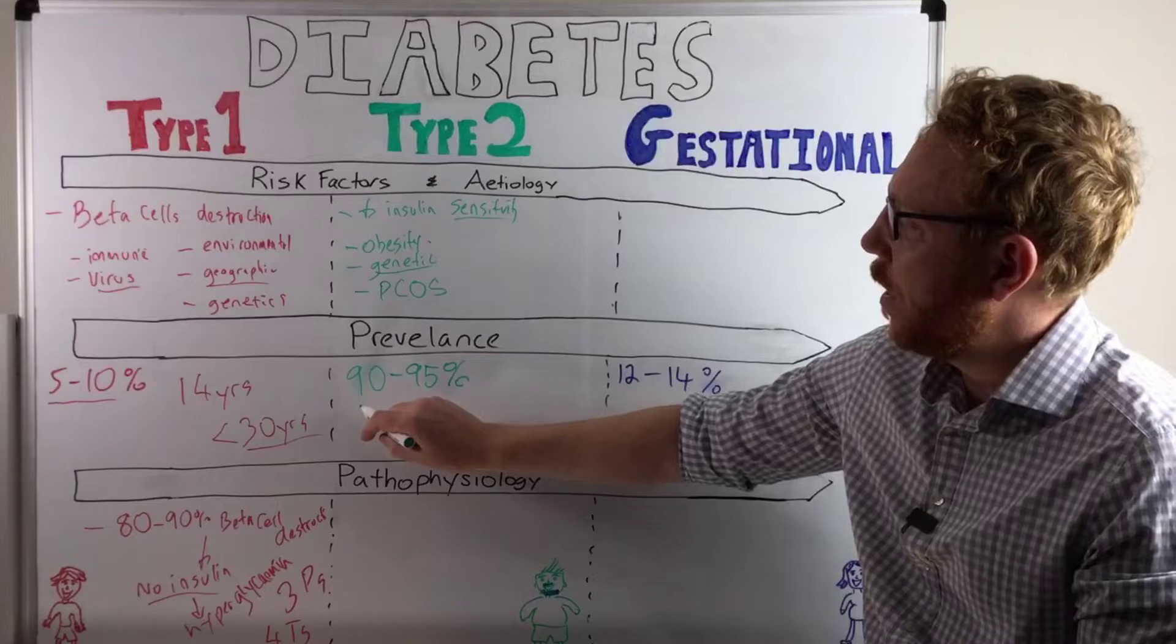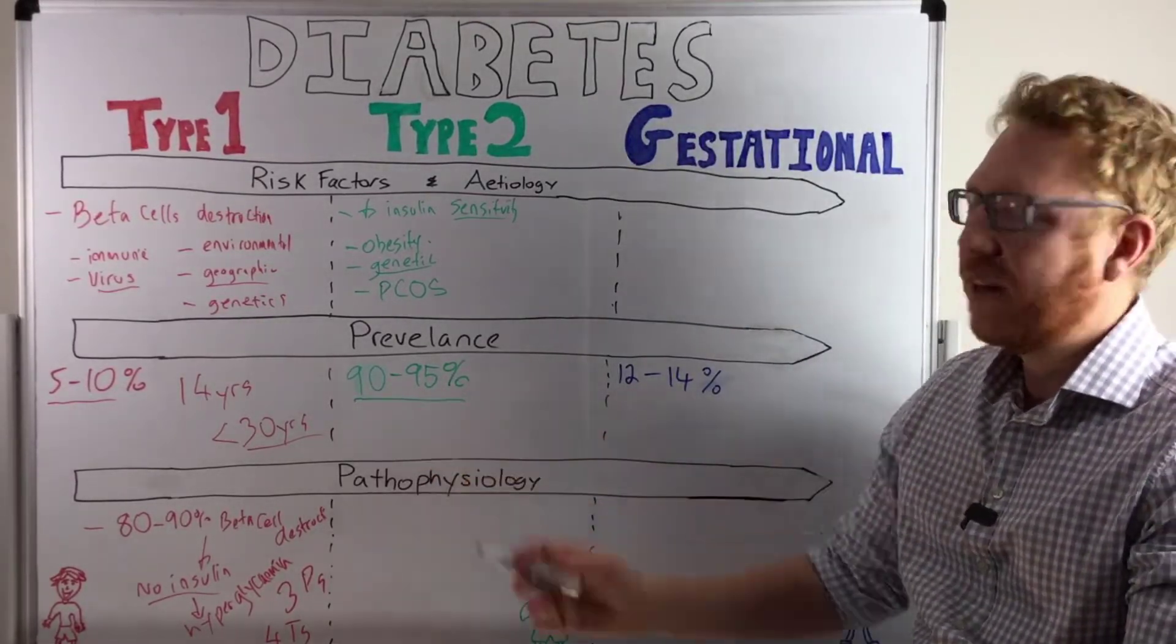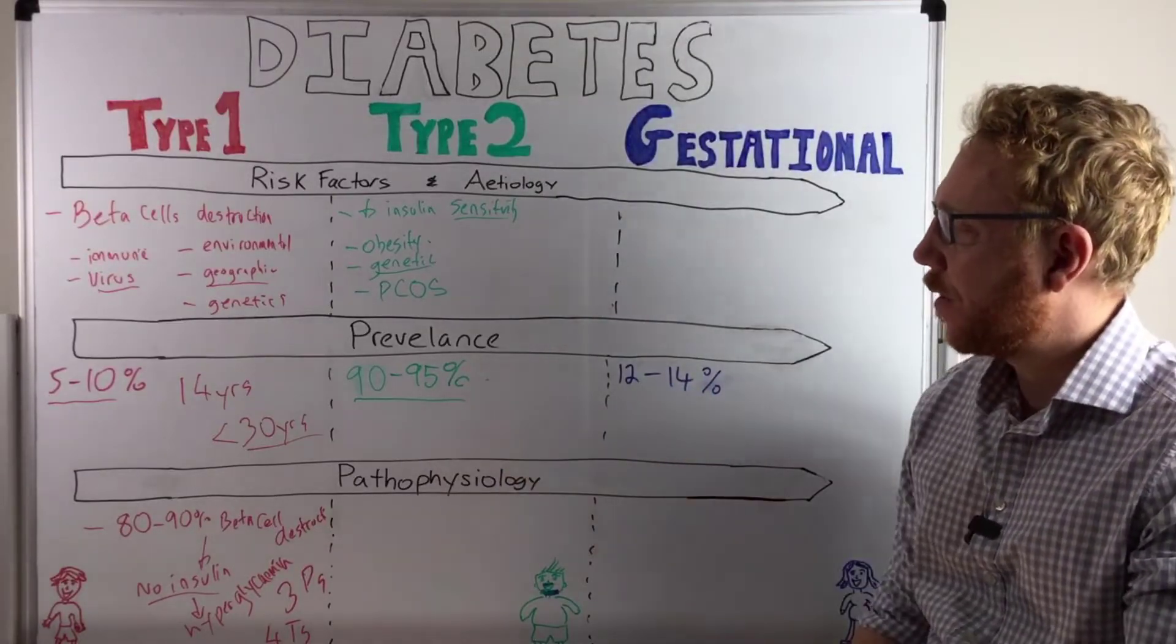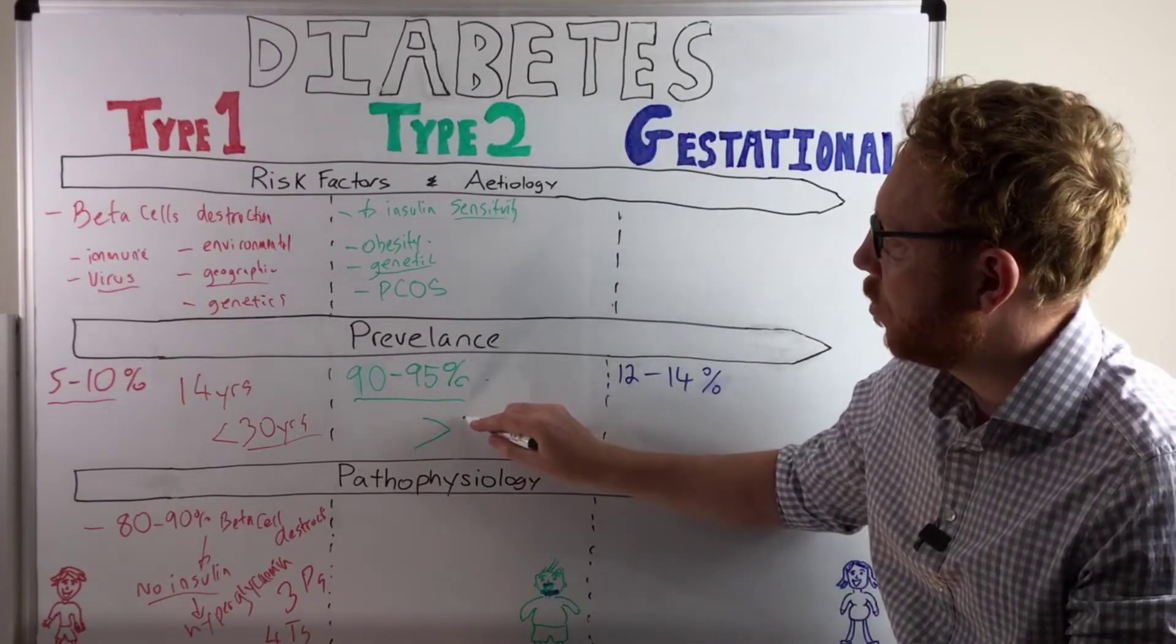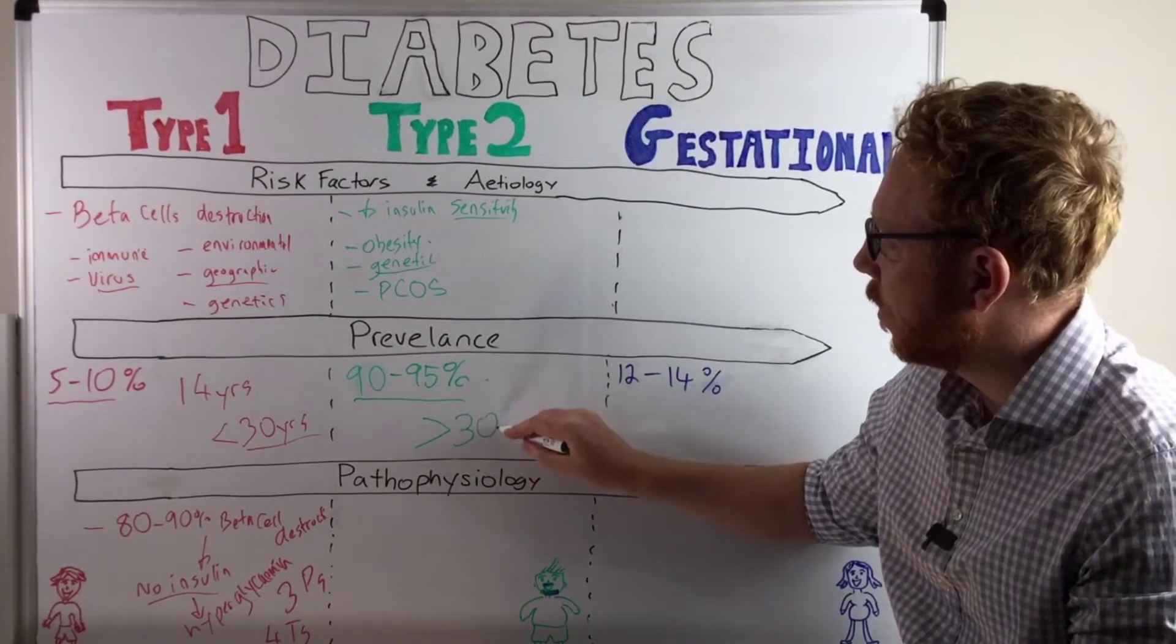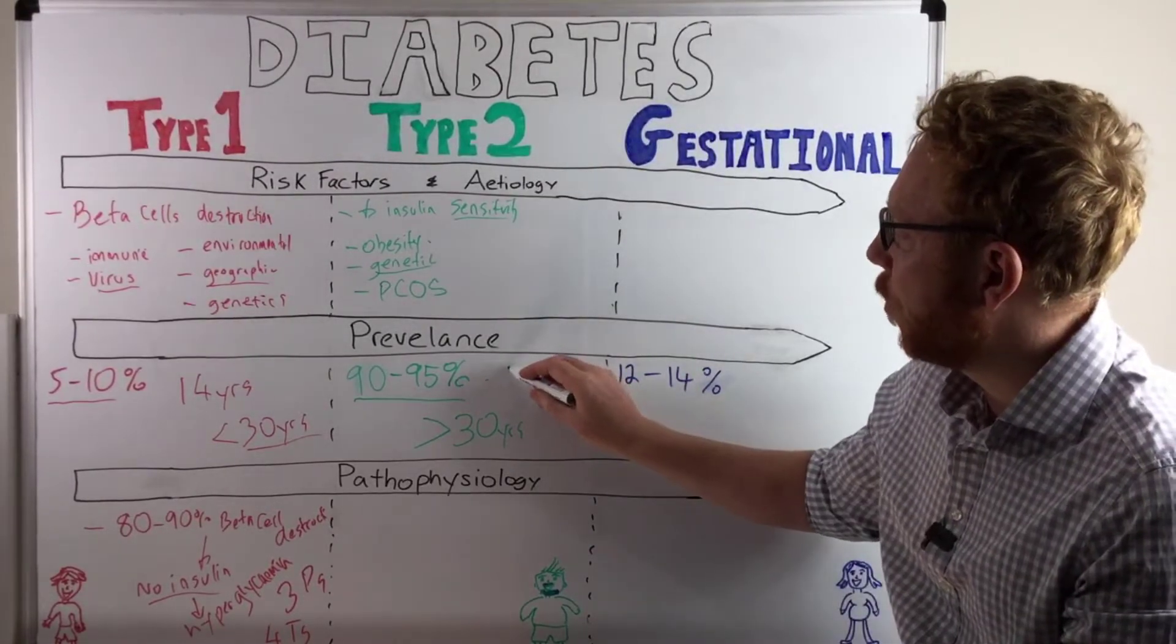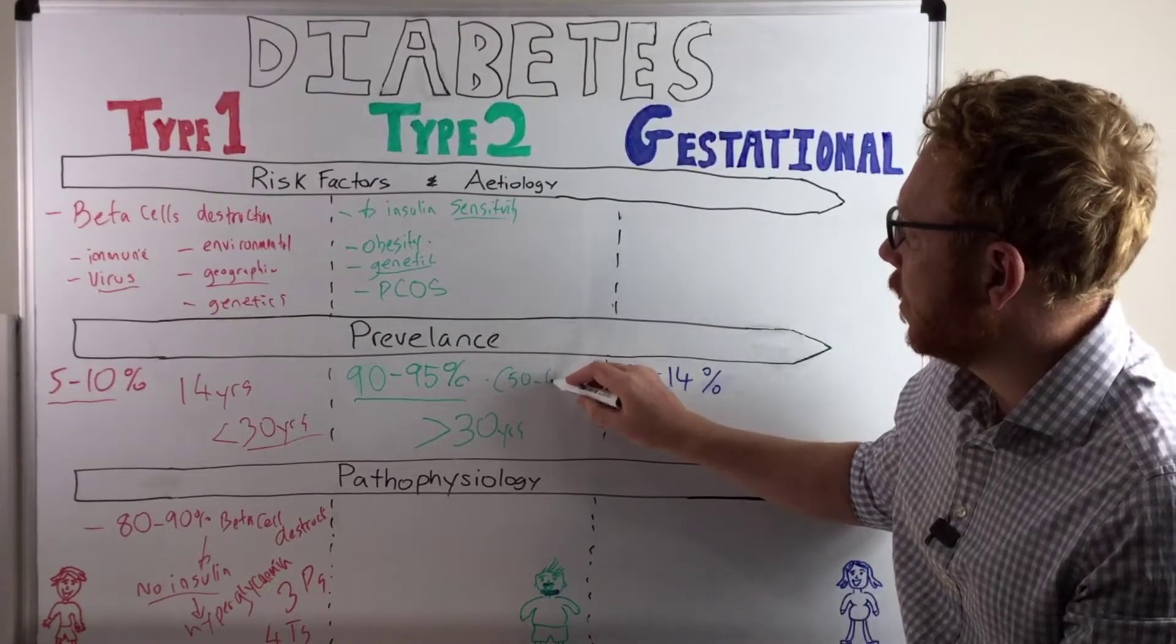In terms of the prevalence, you can see that this is the most common by far. So approximately 90 to 95% of individuals with diabetes mellitus would fit into this category. In terms of age, it's really most likely found in individuals over 30 years. The most common age kind of group where you are most likely to be diagnosed is between 50 and 60 years.